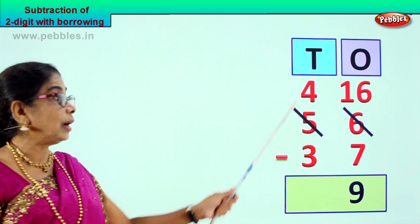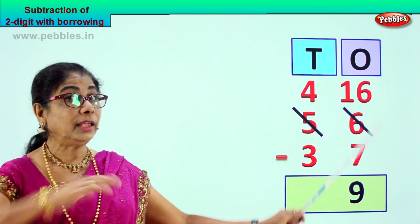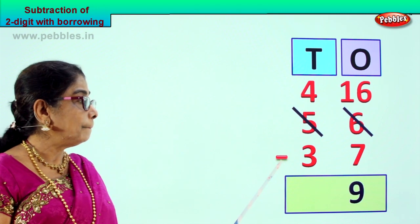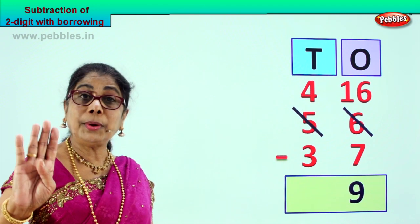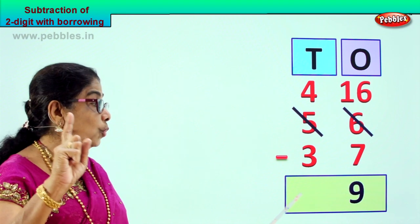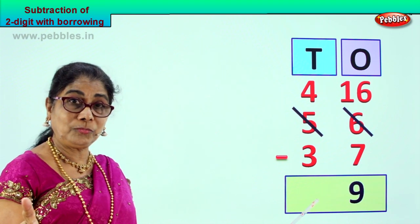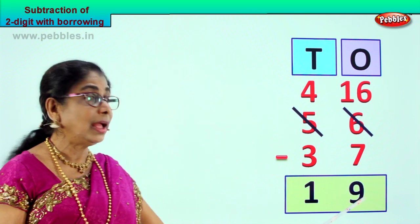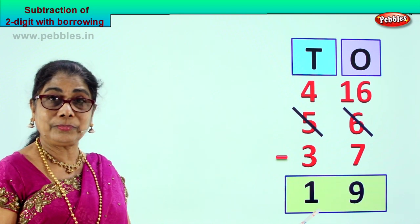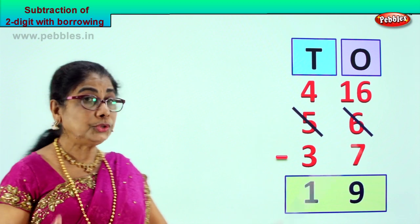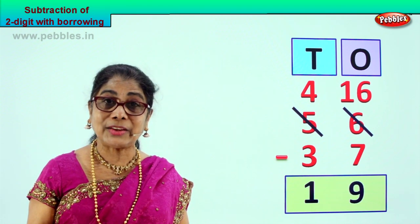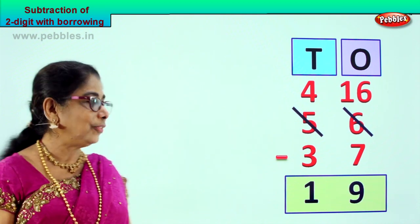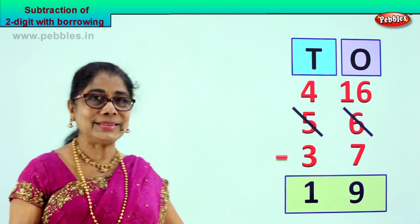Now we go to the tens place. Here we gave away 1, so we have only 4 left. 4 minus 3 gives you 1. So 4 minus 3 is 1. Our answer is 19. Now you know what is the meaning of 2 digit subtraction with borrowing.